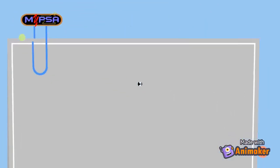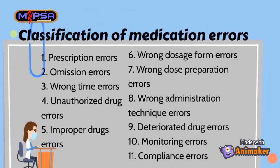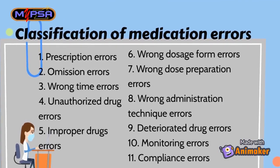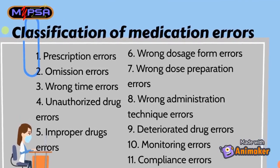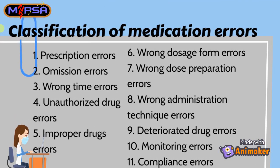The types of medication errors can be classified into prescription errors, omission errors, wrong time errors, unauthorized drug errors, improper drug errors, wrong dosage form errors, wrong dose preparation errors, wrong administration technique errors, deteriorated drug errors, monitoring errors, and lastly compliance errors.